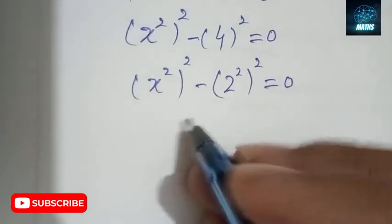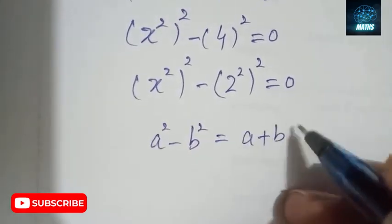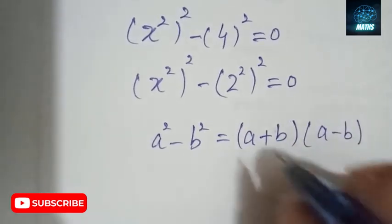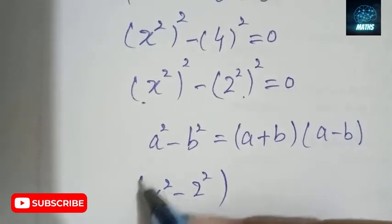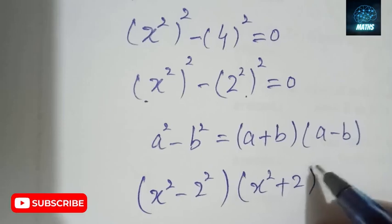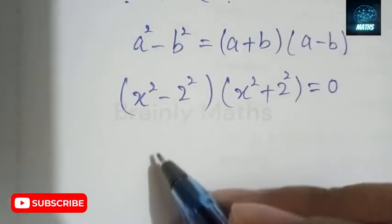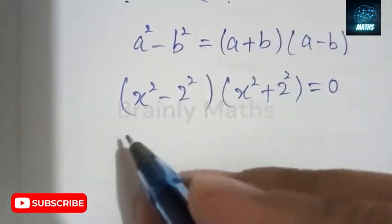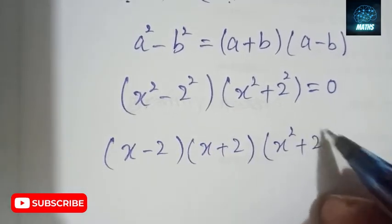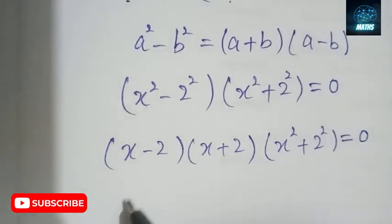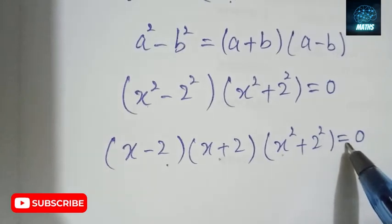Now we will apply the identity a² - b² = (a + b)(a - b). So we write (X² - 2²)(X² + 2²) = 0. We further factor X² - 2² as (X - 2)(X + 2), giving us (X - 2)(X + 2)(X² + 4) = 0.